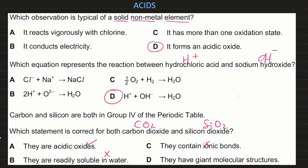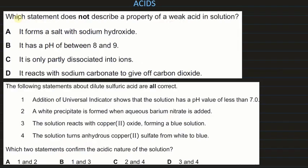They have a giant molecular structure — only silicon dioxide has a giant molecular structure; carbon dioxide is simple molecular. So the correct answer is A.